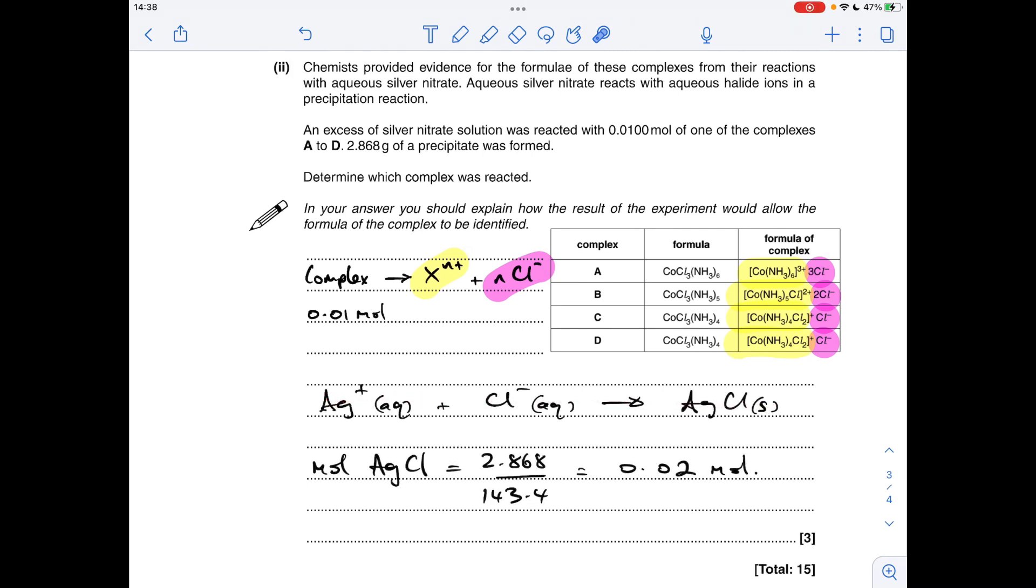So the moles of silver chloride is going to be mass over Mr, which is 0.02 moles. So 0.02 moles of that, there must have been 0.02 moles of chloride ions present. So you can see if there was only 0.01 moles of complex that's put twice as many moles into the solution, so it was B, because that's got those two chloride ions to react with the silver ions.